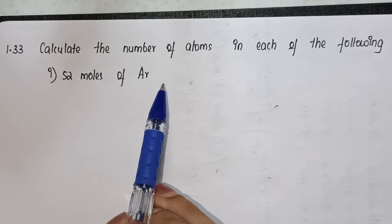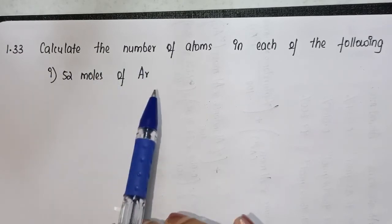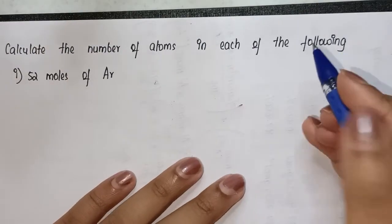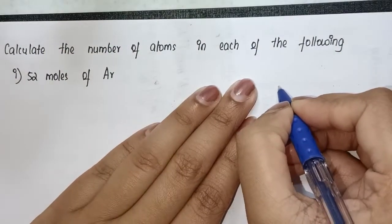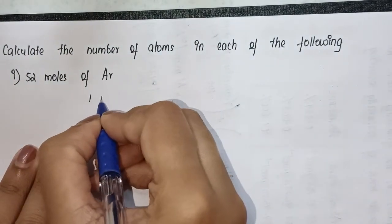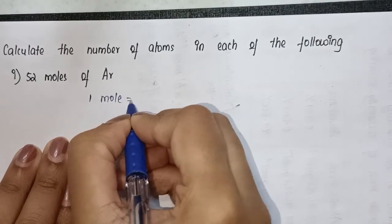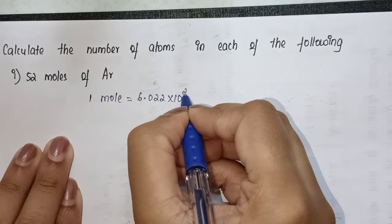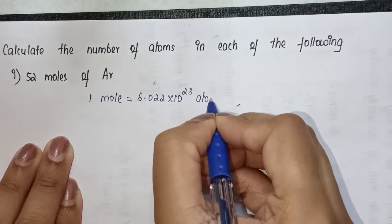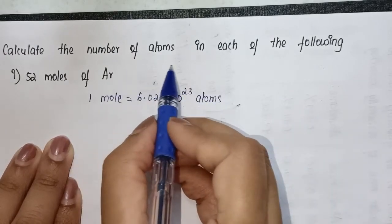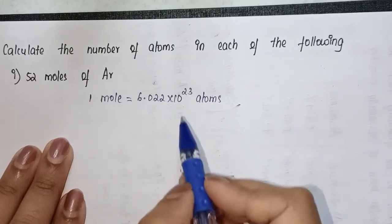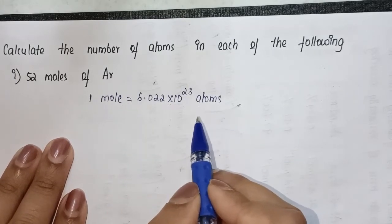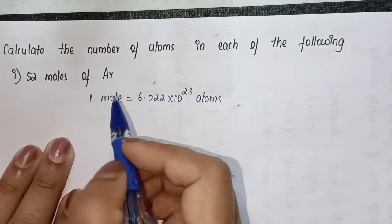To solve this, we need to understand one key relation: one mole is equal to 6.022 × 10²³ atoms. Because the question clearly asks to calculate in terms of number of atoms, our relationship should also be with respect to that.